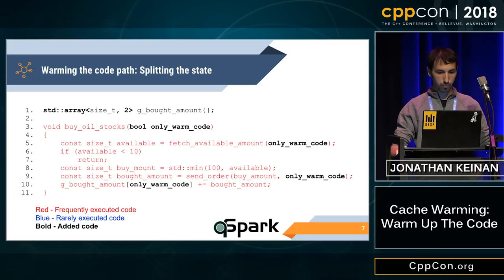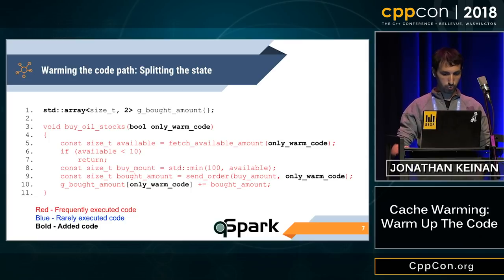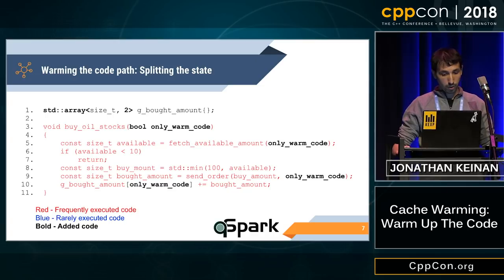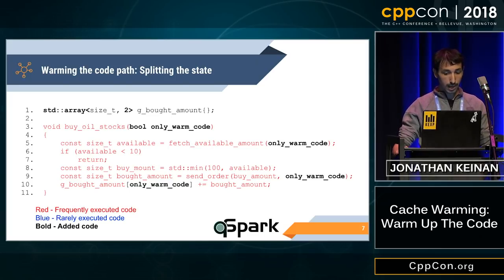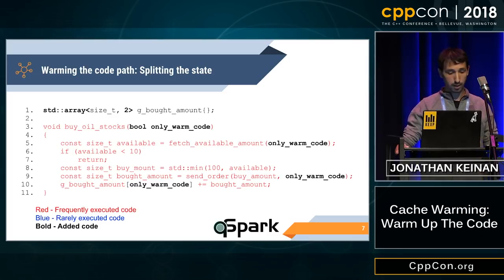So what can we do to change that? First, we remove the if. Now the counter was also changed into an array of two counters. Index zero in the array will provide us the real state and index one in the array will provide us the cache warming state. We use the boolean as an index into the array to avoid branch prediction. The added bonus is we get to warm the data as well — most likely the counter will be in the same memory page.